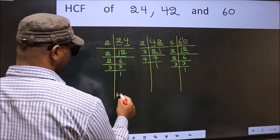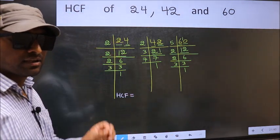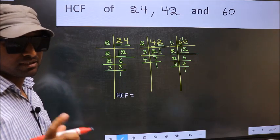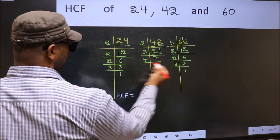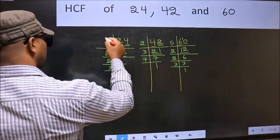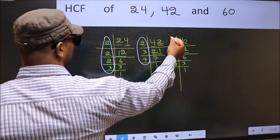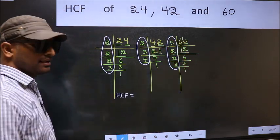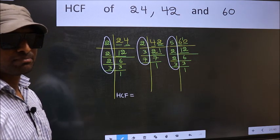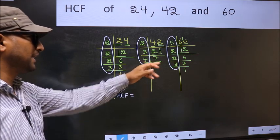Therefore, our HCF is the product of numbers which should be present in these 3 places—that is here, and here, and also here. I repeat: HCF is the product of numbers which should be present in these 3 places.